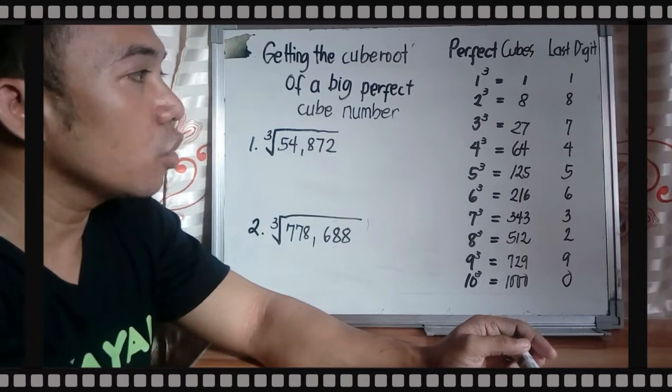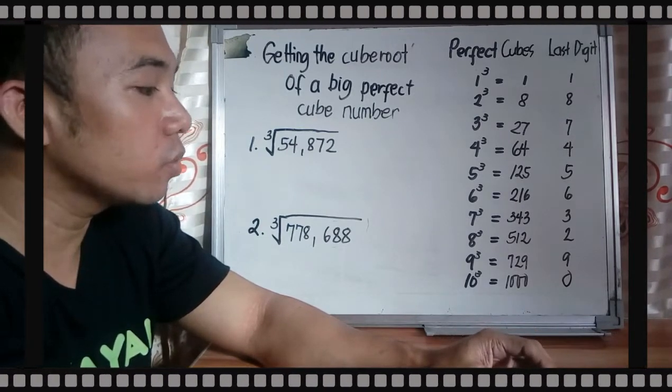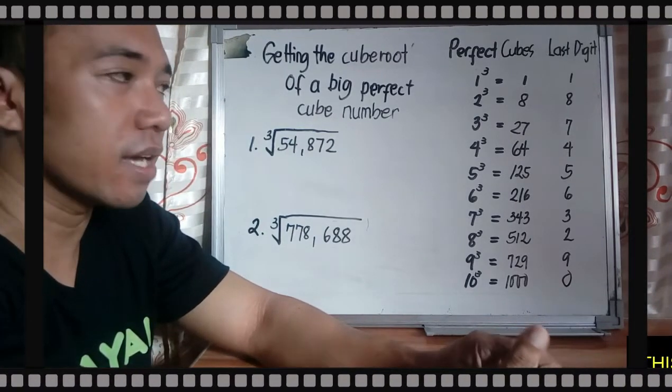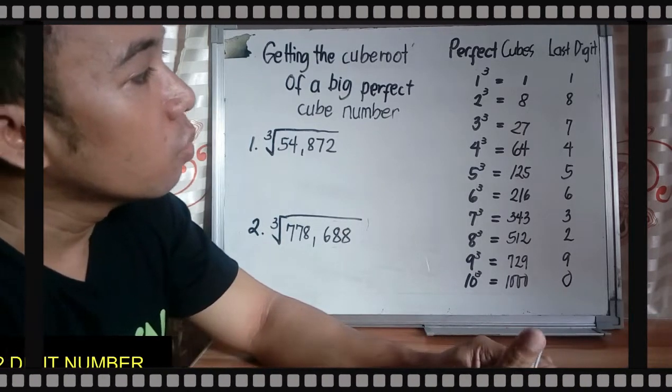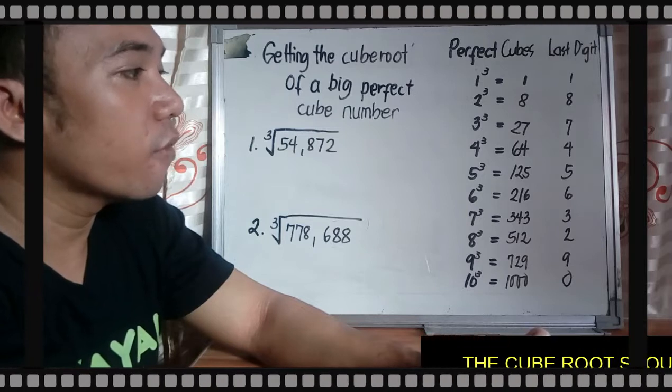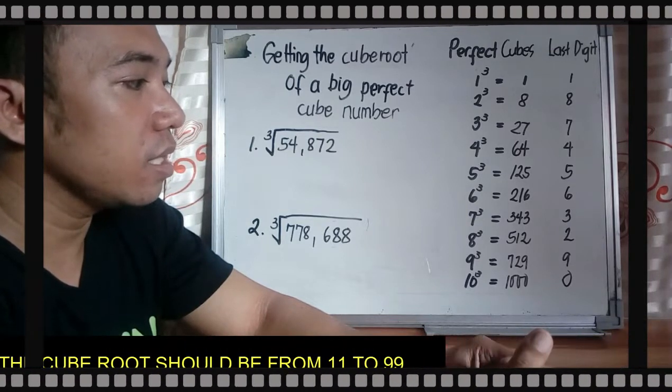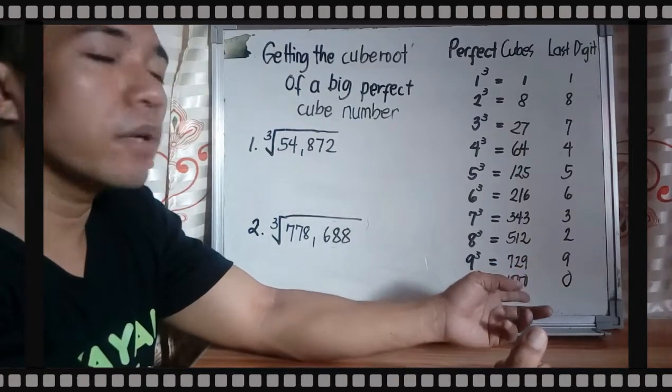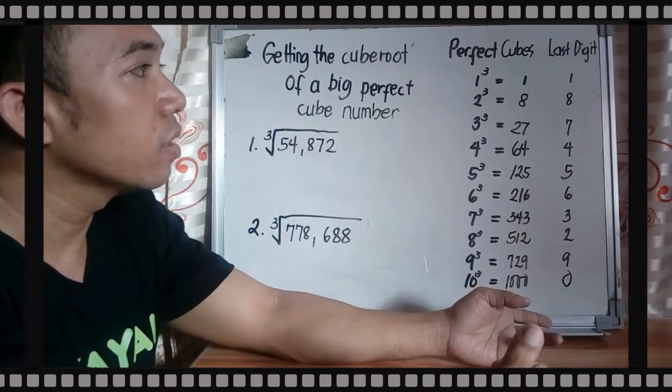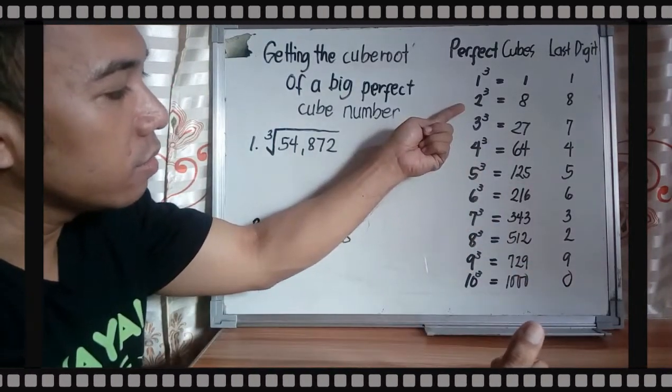You have 1³ = 1, 2³ = 8, 3³ = 27, up to 10³ = 1000. So the last digits are 1, 8, 7, 4, 5, 6, 3, 2, 9, 0. So how can you remember this easily?